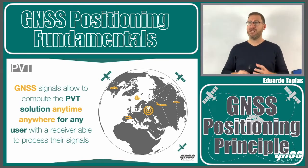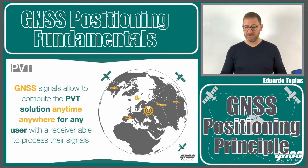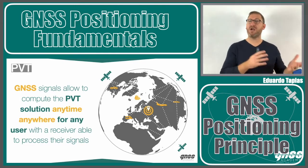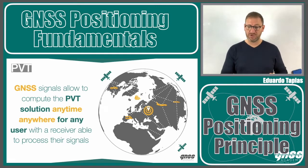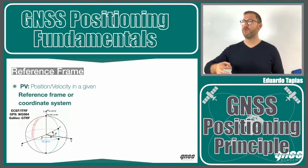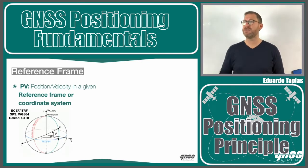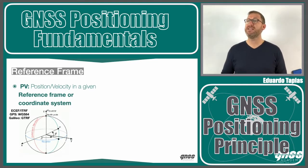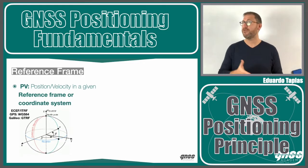One of the first things when we talk about PVT is position. What does position mean? When we talk about position, we talk about X, Y, Z — coordinates in a Cartesian reference frame. We have different reference frames, but in any case, when we talk about position, we talk about a reference frame. This is one of the main cornerstones in GNSS. Typically, when computing a position using a GPS or Galileo constellation, we use what we call an ECEF reference frame.